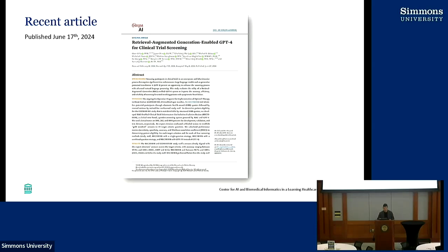There was a recent article published only last week talking about retrieval augmented generation using ChatGPT for clinical trial screening for inclusion and exclusion criteria. This was published in the New England Journal of Medicine AI. This is work starting to validate that the RAG model is a good place to start when looking at this kind of work for chart reviews.